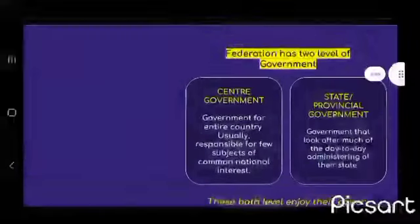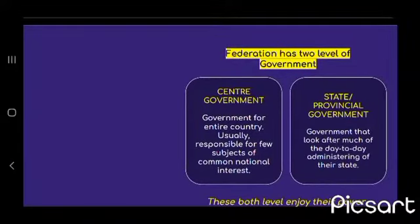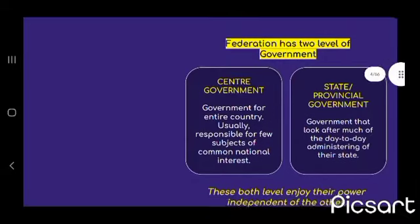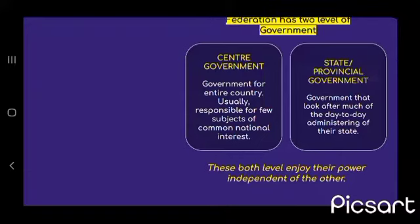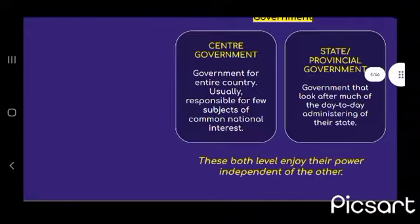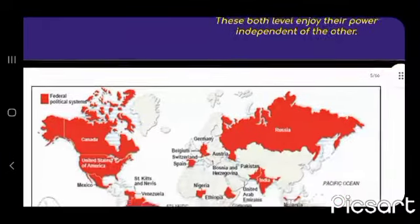Federalism is a system of government in which power is divided between a central authority and various constituent units of the country. A federation has two levels of government: central government and state or provincial government. The central government is for the entire country, usually responsible for a few subjects of common national interest. The state government looks after much of the day-to-day administration of their state. Both levels enjoy their power independent of each other.